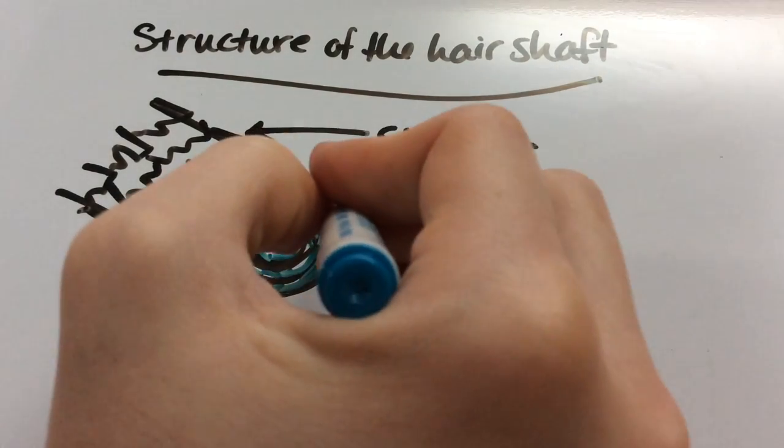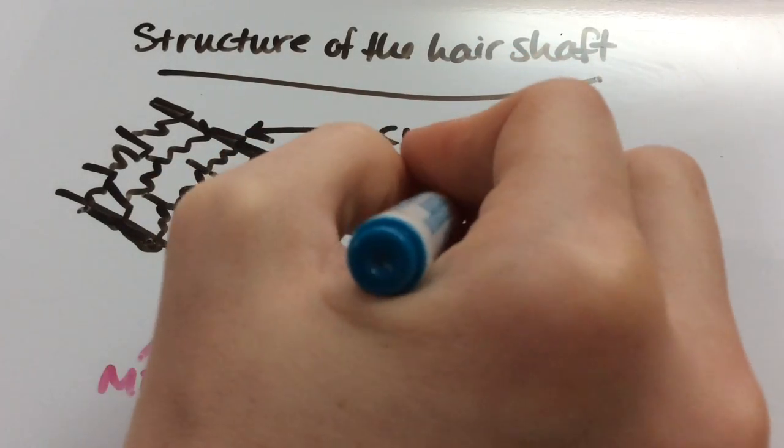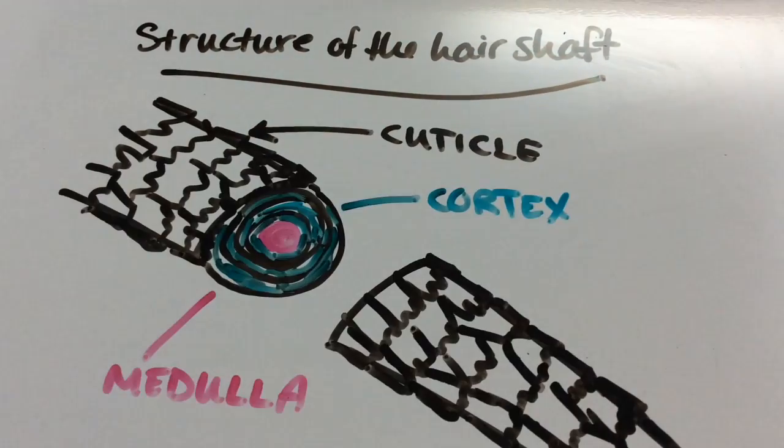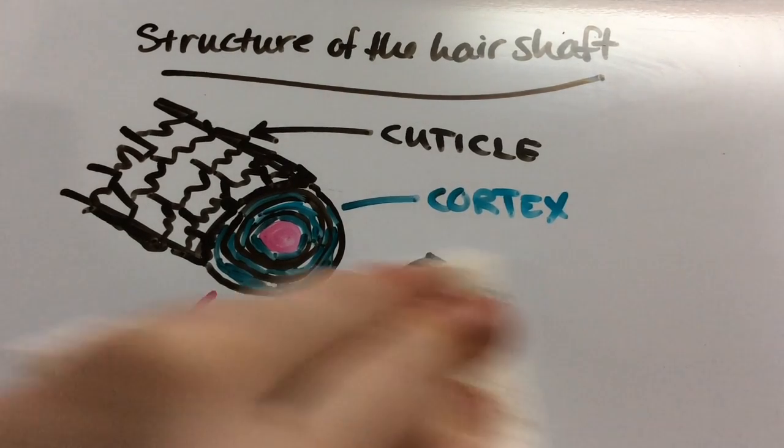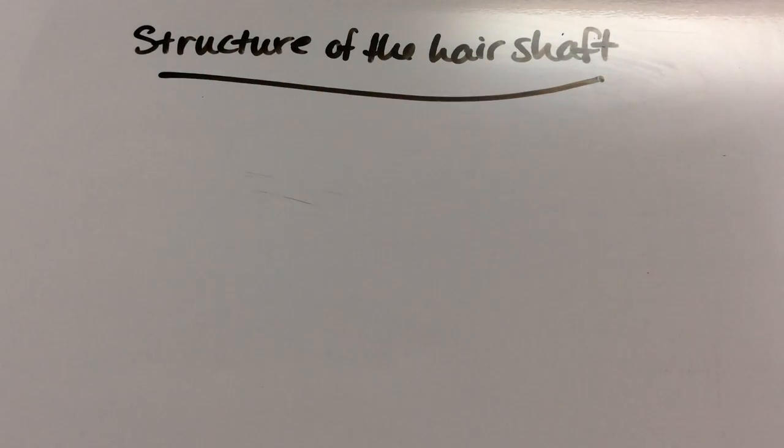The blue I circled is the cortex layer - the middle layer. It's fibrous protein, elongated cells. That's where melanin is contained, which gives you the pigment and color of hair. You can get into a lot more detail about the cortex structure, but I'm just keeping it to the basics.